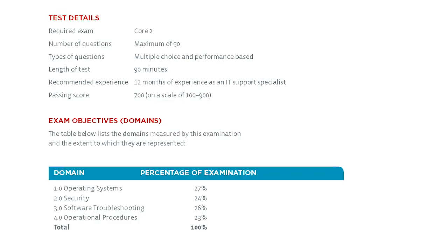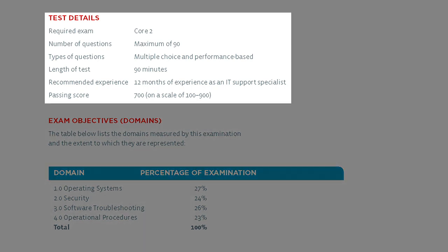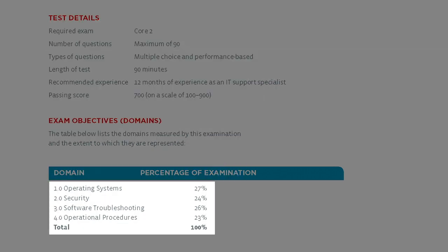The big thing I want to look at here are the domains. Before we do, notice it's going to be a maximum of 90 questions, multiple choice and performance-based, with a test length of 90 minutes. Recommended experience is 12 months, and a passing score of 700 on a scale of 100 to 900. Here are our four domains: operating systems at 27%, security at 24%, software troubleshooting at 26%, and operational procedures at 23%.